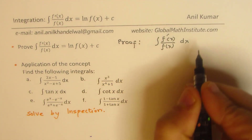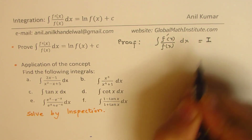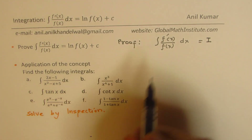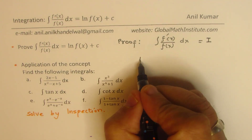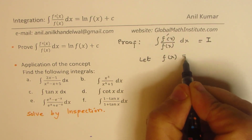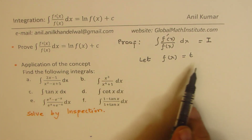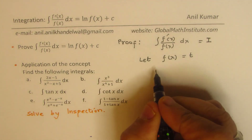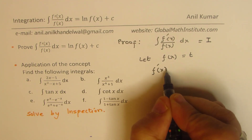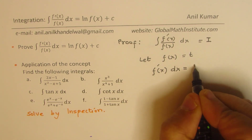Let us say this integral is I. We'll continue by substitution: let f(x) be equal to t. If we differentiate both sides, we get f'(x), which is the derivative of f(x) dx, is equal to dt.